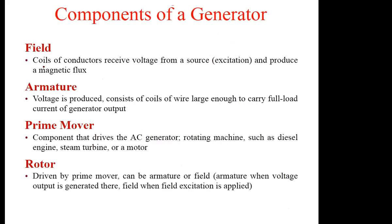The components of the generator: the field conductors receive voltage from a source, and that excitation will produce a magnetic flux. Then the voltage is produced in the armature — large wires to contain the rotor and transfer the full load current as the generator output. Then also the prime mover, which is used to rotate the generator components, that is the coils. Then we have the rotor, which is driven by the prime mover — this is where we have the winding of the coils.